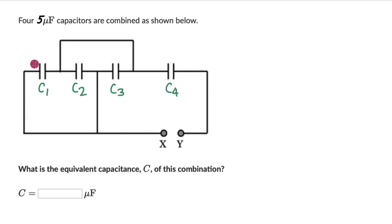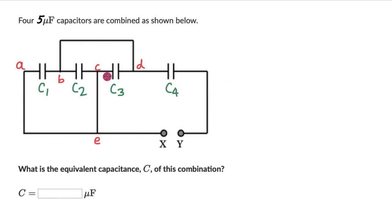And we can label all the nodes as well. We can call this A, this is B, this is C, D, and we can call this node E. Now our strategy would be to identify sets of capacitors which are in series or parallel, because we know how to calculate the equivalent capacitance of capacitors in series and parallel.